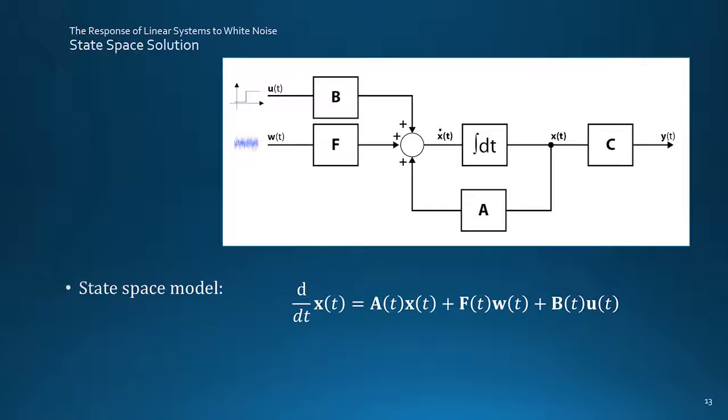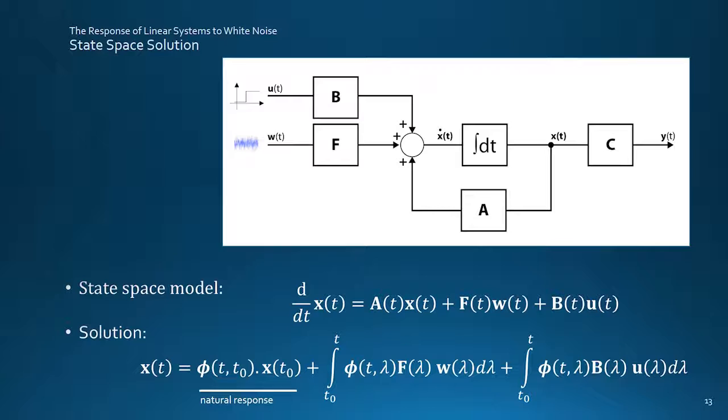The diagram shows a standard state-space model of a practical system with a finite bandwidth. It has both a zero-mean noise input and a separate one for any offsets or other deterministic signals. The model solution comprises the natural response with a state-transition matrix, or STM, phi, which maps the system state from the initial time t0 to the current time t, and the forced-response convolution integrals, driven by the white noise input w, and the deterministic input u.